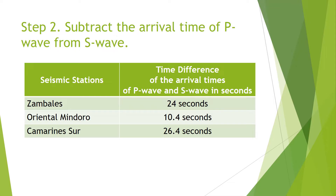If you don't have a distance-time graph, you will compute the difference in arrival times of P wave and S wave obtained from three seismic stations. In this hypothetical earthquake shown in the figure, the time differences are already provided. From a seismic station in Zambales, the time difference of the arrival of P wave and S wave is 24 seconds. The earthquake was also felt in Oriental Mindoro, where the time difference is 10.4 seconds, and in Camarines Sur, it is 26.4 seconds.